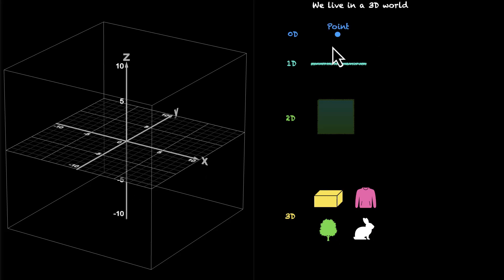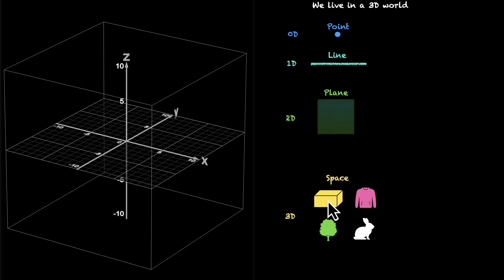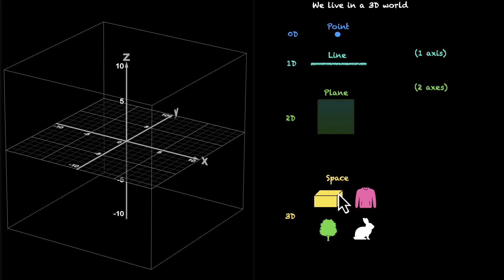When the point is your entire world, there is nowhere to move. When you're in a line, at least you have one direction to move. A plane gives you two directions and space gives you three dimensions. For a line we need one axis, for example the x-axis. For a plane we need two — X and Y. And for space, we need three axes: X, Y, and Z. Let's see this in action.